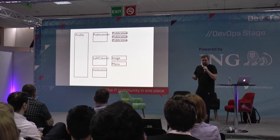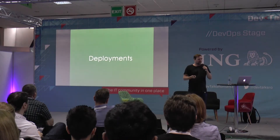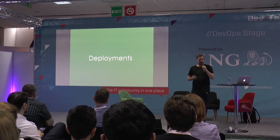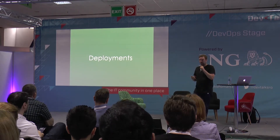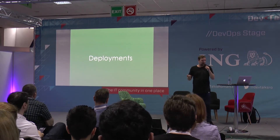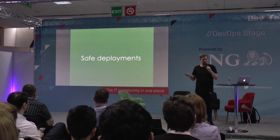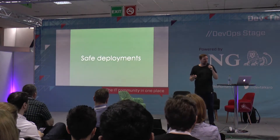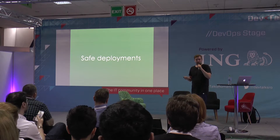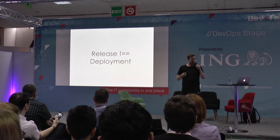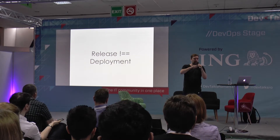Most errors are actually introduced by deployments, because if we don't change anything we're probably not going to break anything — but if we change stuff, we're going to break things much more easily. Errors are going to happen there. So we should try to make deployments as safe as possible. One way to do this is to decouple the deployment of code from the actual release of code.